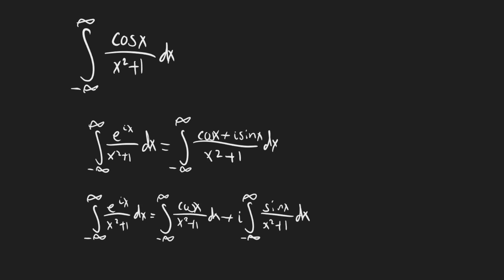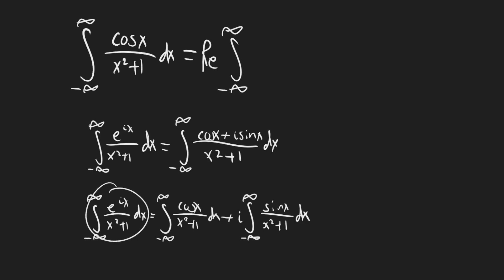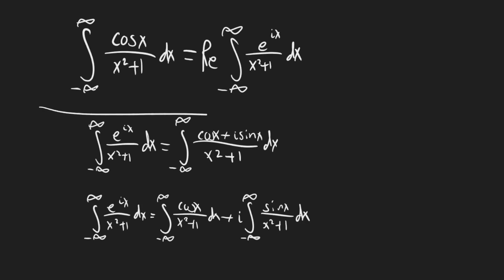The reason I've written this out is because it tells us something about our original integral. It tells us that the integral we're focused on is actually equal to the real part of the integral of e^(ix) over (x² + 1). These two integrals are totally equivalent, because the cosine integral is real-valued, and the sine integral is real-valued but multiplied by i outside the integral. So if you take the real part, you're left with just the cosine integral.